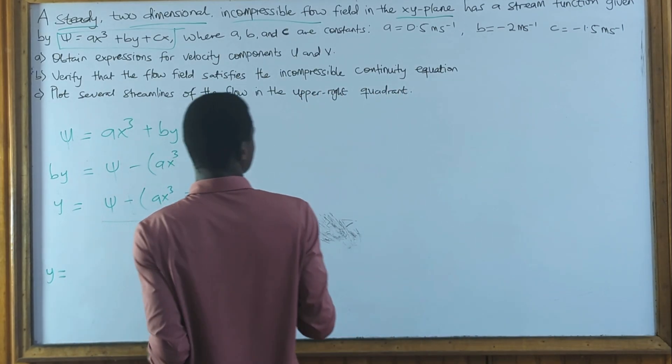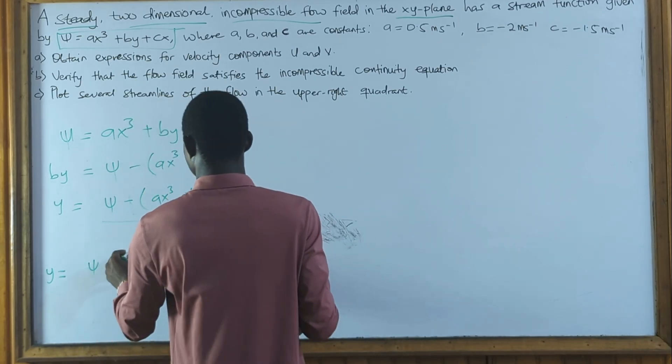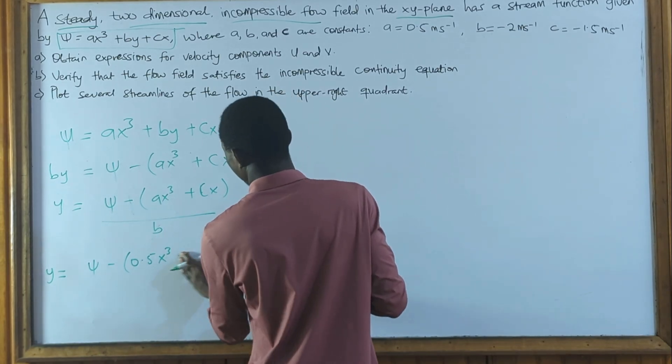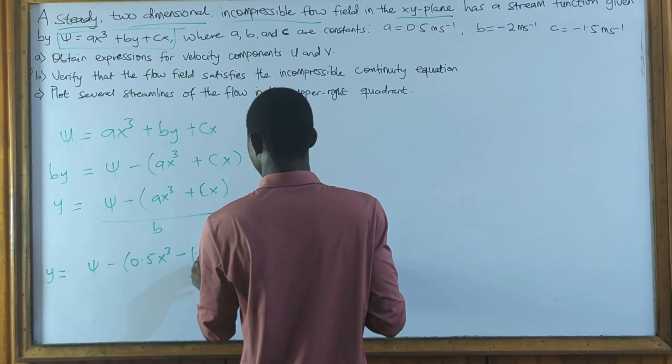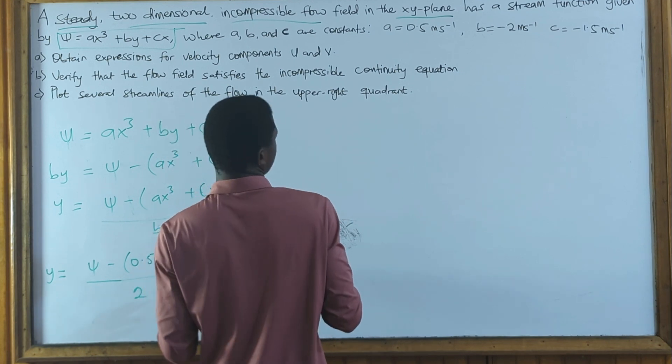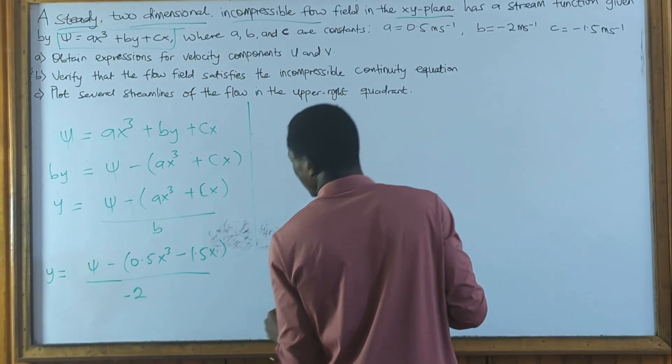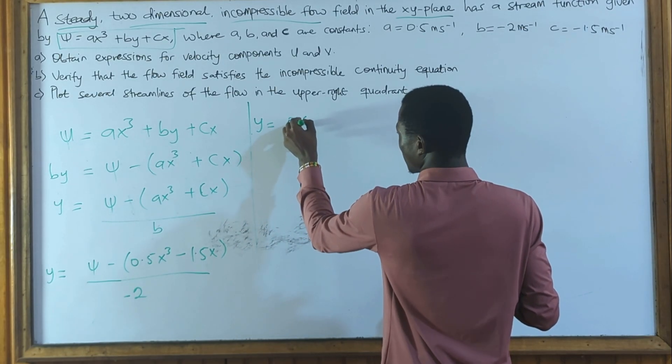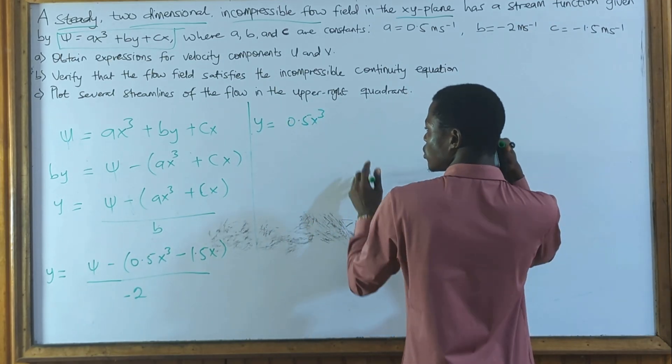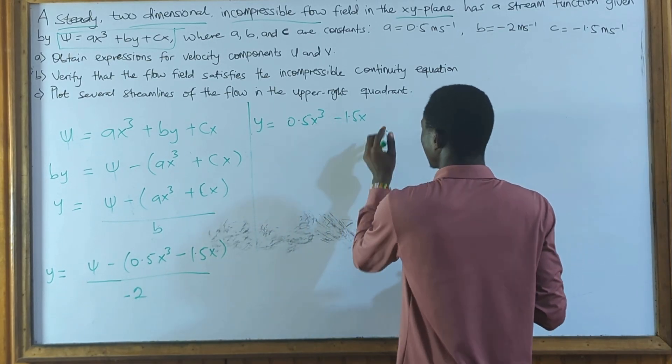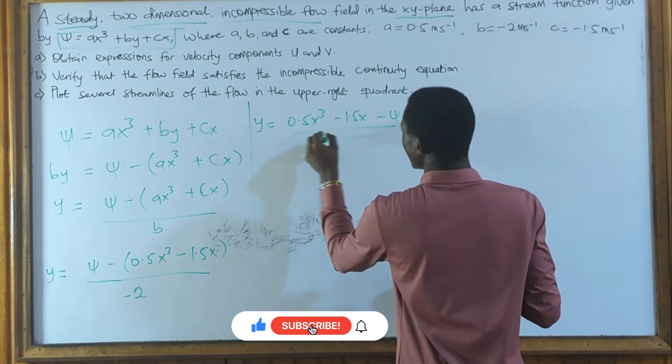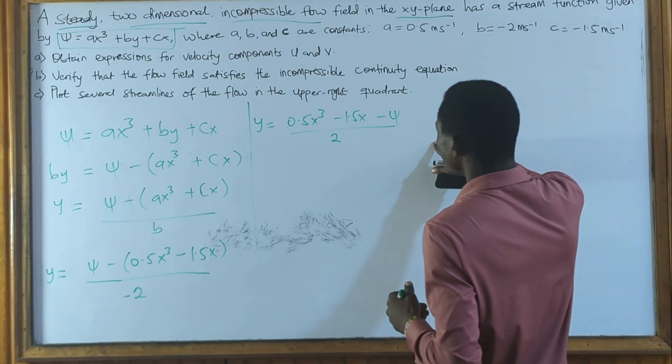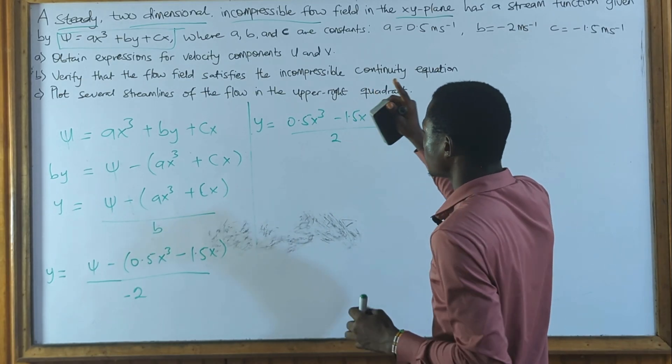And we have the constants we are given to us in the question. So we can write y = ... we don't know ψ, we know a to be 0.5. So x³ + -1.5, so let's just make it -1.5x all over -2. So we want to rewrite this equation well. So y = (0.5x³ - 1.5x - ψ) / 2. So this is going to be our equation.